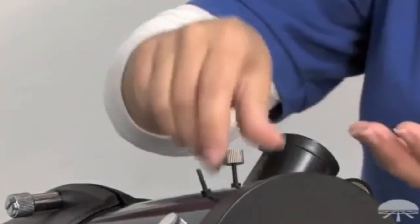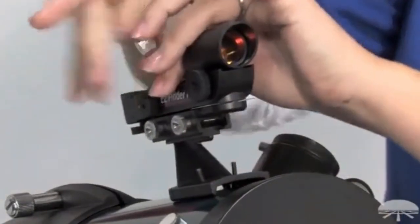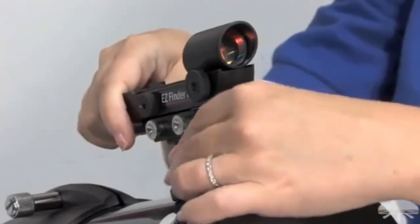Unscrew the thumb screws from the post. Take your Orion Easy Finder 2. Put it over the post here. You want to make sure the window is facing towards the open end of the telescope.